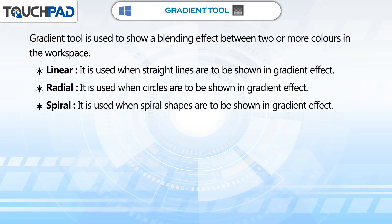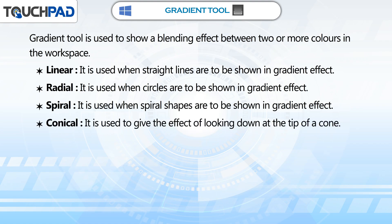Spiral: It is used when spiral shapes are to be shown in gradient effect. Conical: It is used to give the effect of looking down at the tip of a cone.